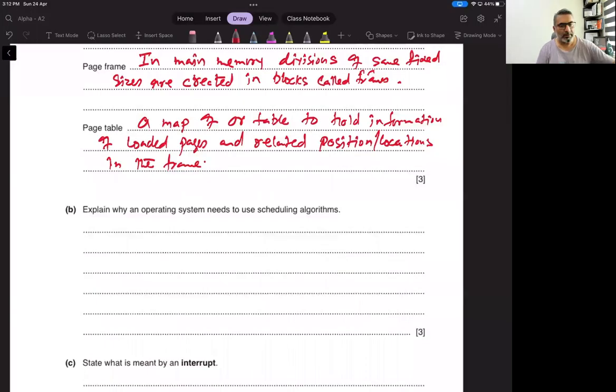Explain why an operating system needs to use scheduling algorithms. Scheduling is basically an algorithm that defines how multitasking will happen. Multitasking is only enabled using scheduling, which means all the loaded programs kept in memory